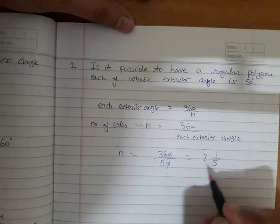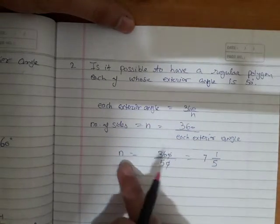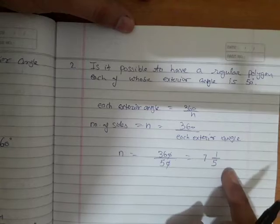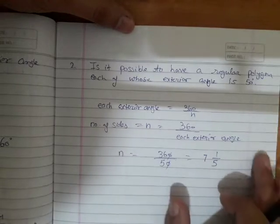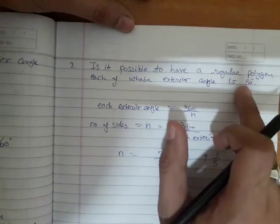is a mixed fraction: 7 and 1/5, which is not a whole number. The number of sides cannot be a mixed fraction. Hence, we can write that the given angle is not possible for a regular polygon.